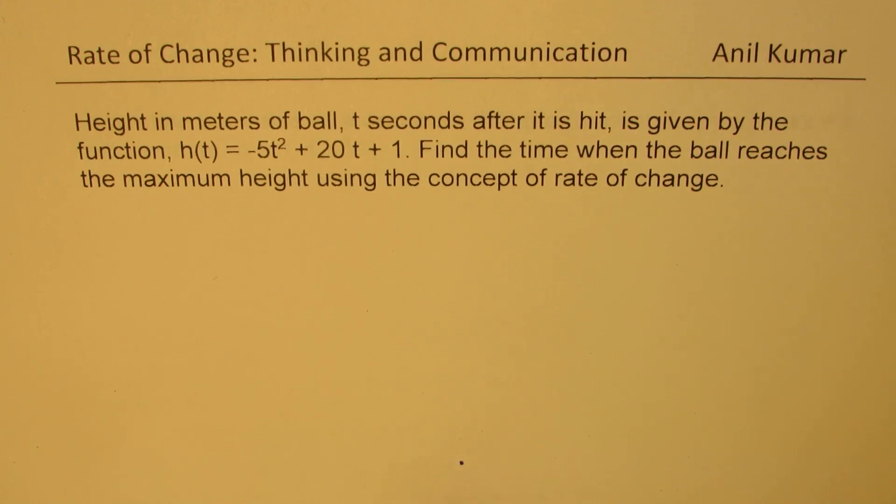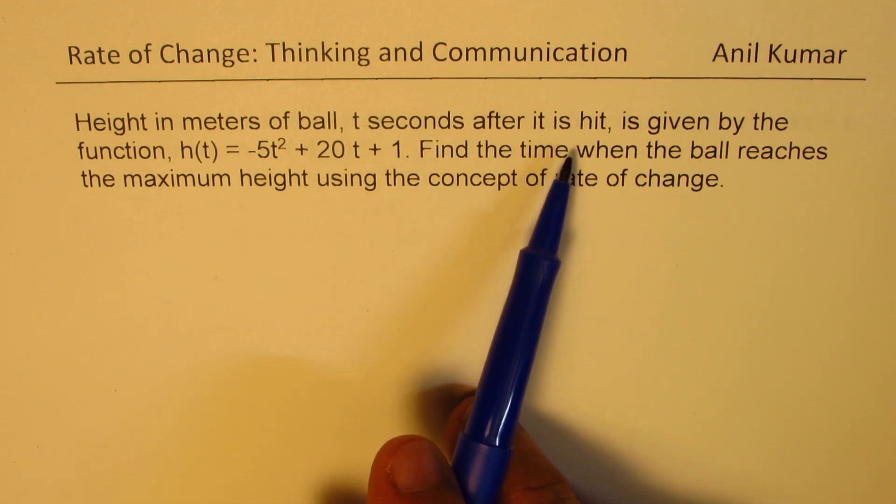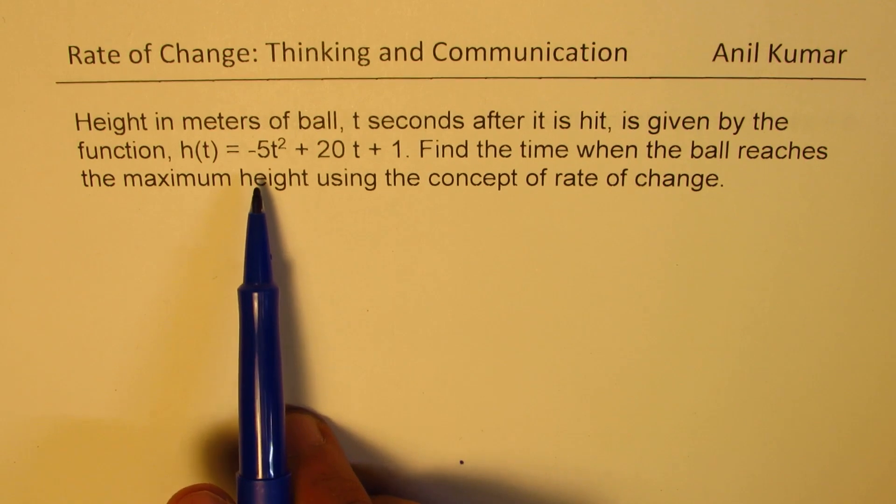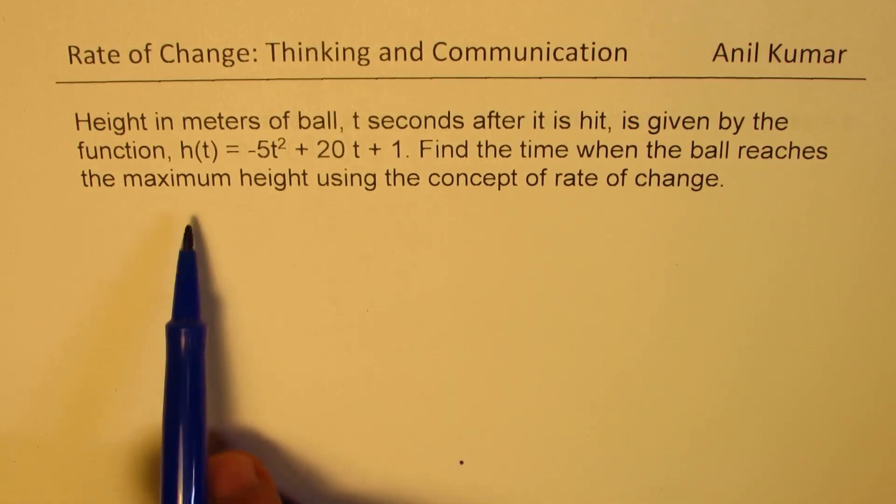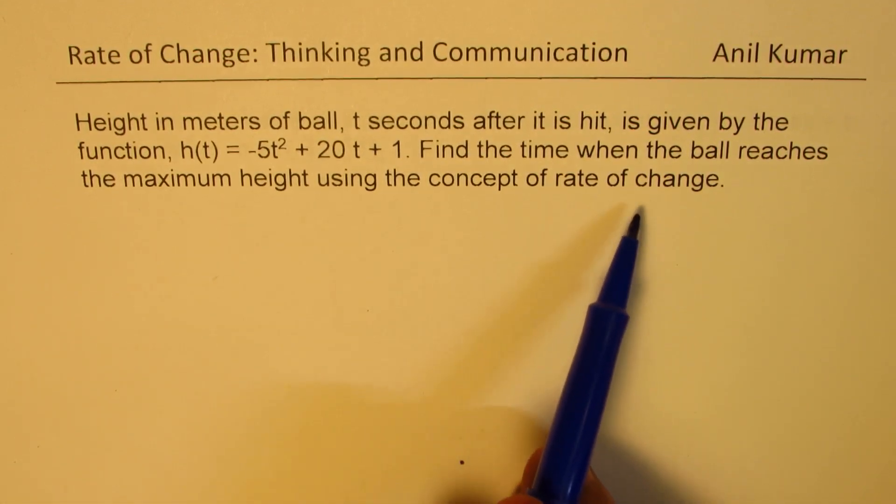The question here is, height in meters of a ball t seconds after it is hit is given by the function h(t) equals minus 5t² plus 20t plus 1. Find the time when the ball reaches the maximum height using the concept of rate of change.